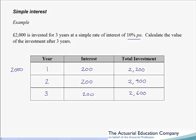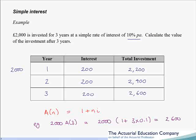That was a little long winded, so what would be nice is if we could get from our original investment of £2000 to our final answer of £2600 in one go. We do that by using something called an accumulation factor. We use capital A(N) to stand for the accumulation factor over N years — i.e. what we multiply our original investment by to get our final investment after N years. The formula is 1 plus N·i. Confirming: 2000 times A(3) is 2000 times (1 + 3 × 10%), and we get our £2600.